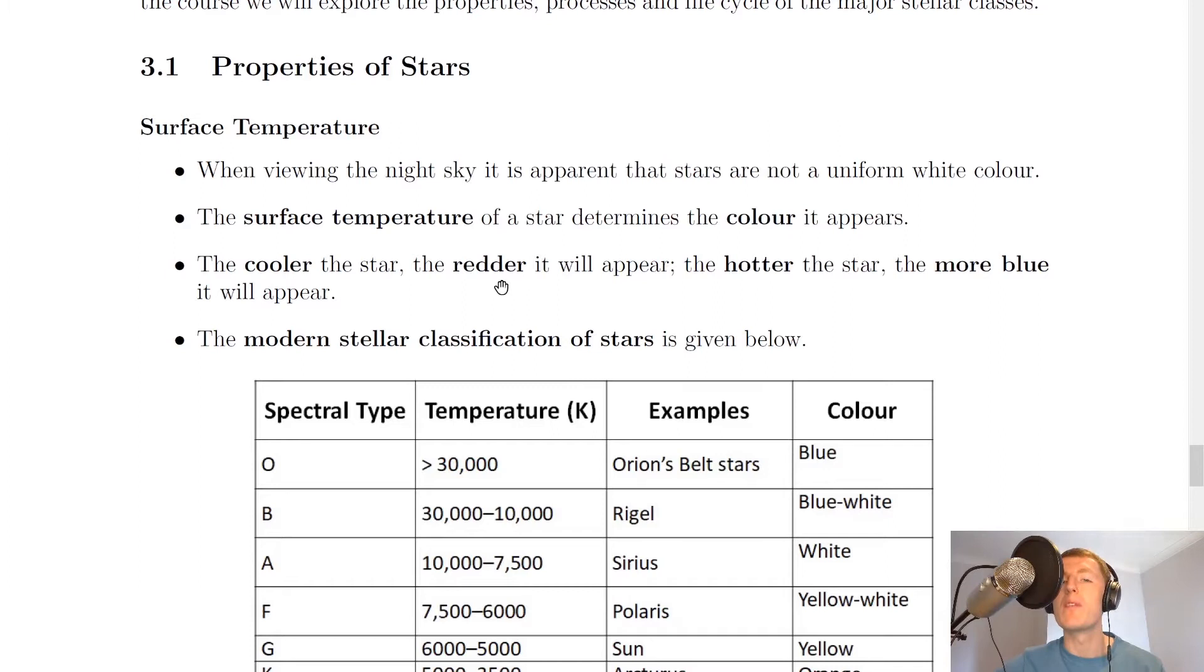The cooler the star the redder it will appear and the hotter the star the more blue it will appear. This goes against the normal way of thinking because you're probably used to associating red things as being hot and blue things as being cold. But for stars it's the other way around.